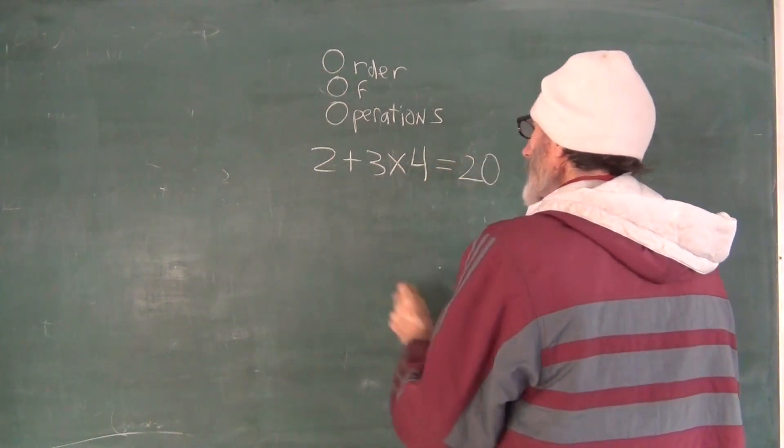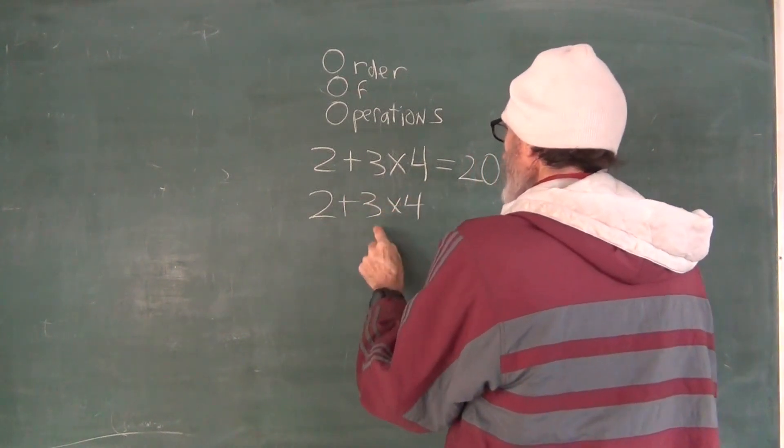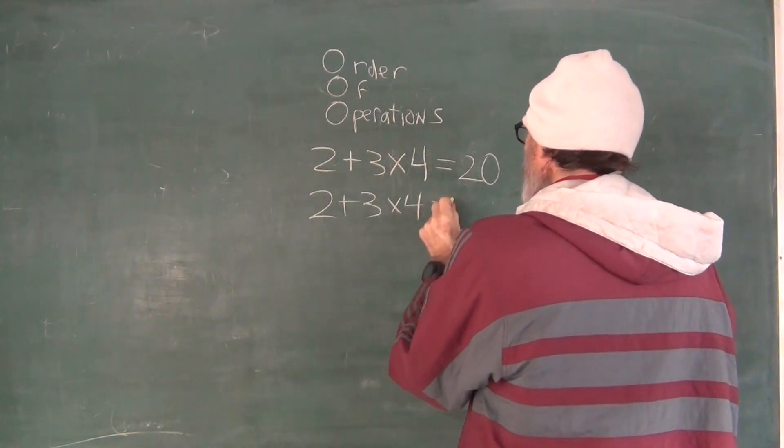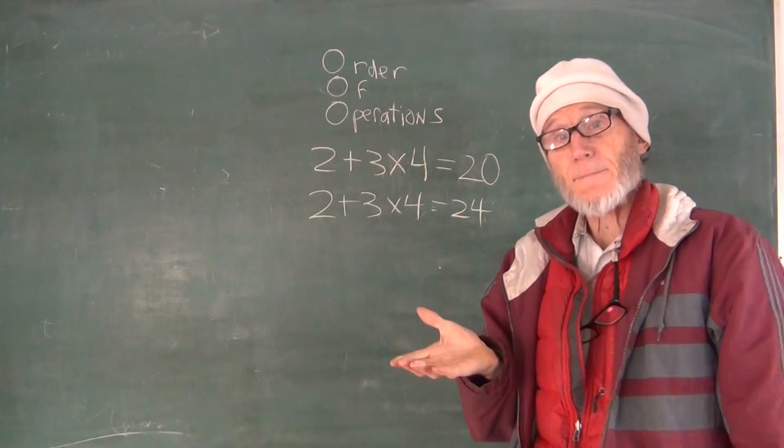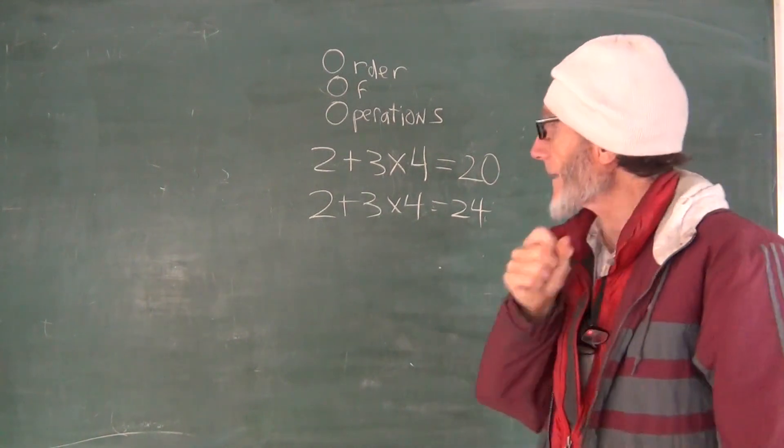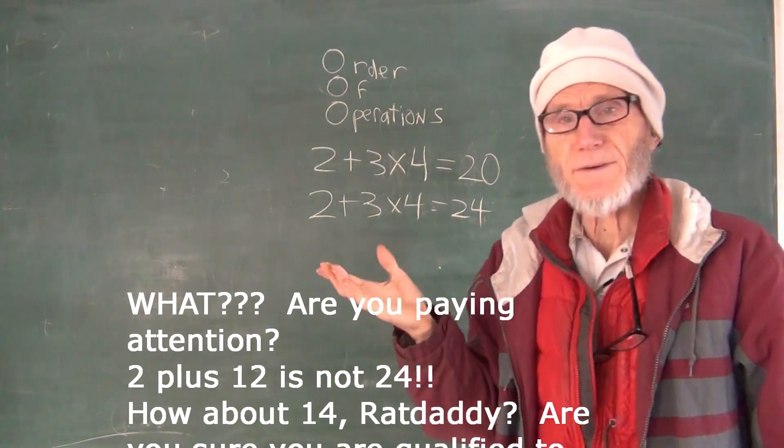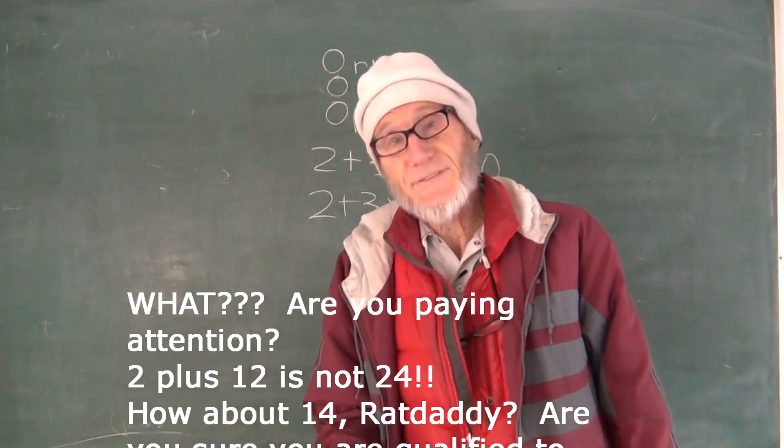Yeah, but then you could also say, well wait a second, three times four is 12 and two plus 12 is 24. Now in both cases I did the math correctly. I mean, two plus three is five, three times four is 12. But depending upon which order you do the operation in, you get a different answer.